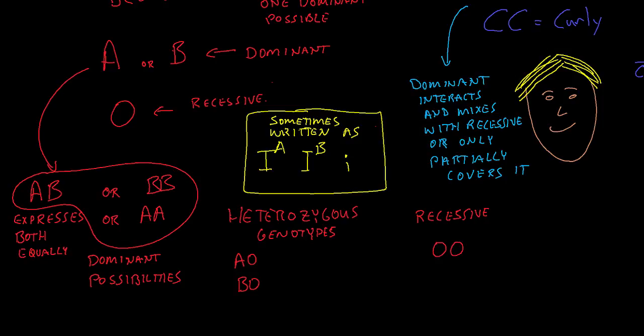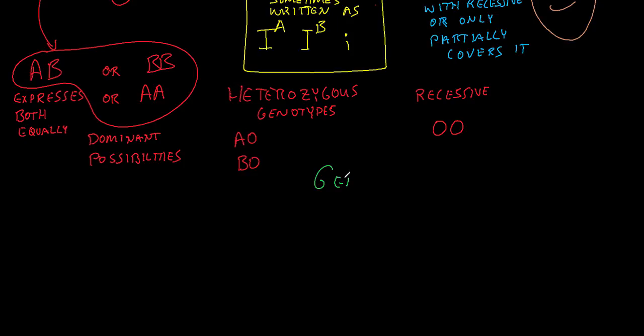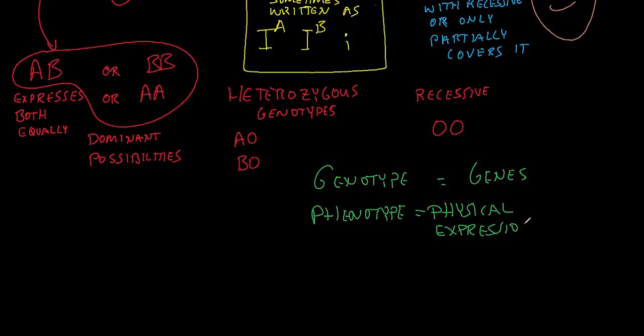They're both showing up equally. So we have our genotype. The genotype are the type of genes you have. The phenotype is the physical expression of those genes. And those come as either dominant or recessive or incomplete dominant or codominant.